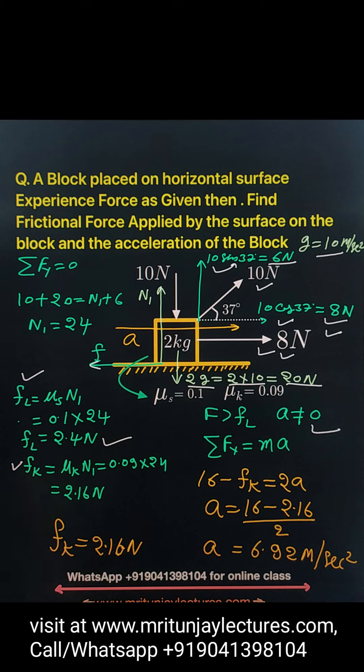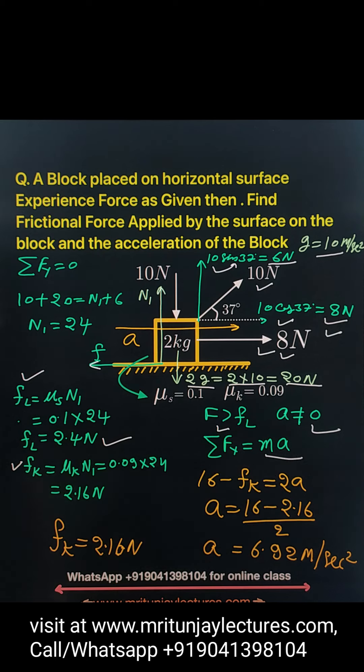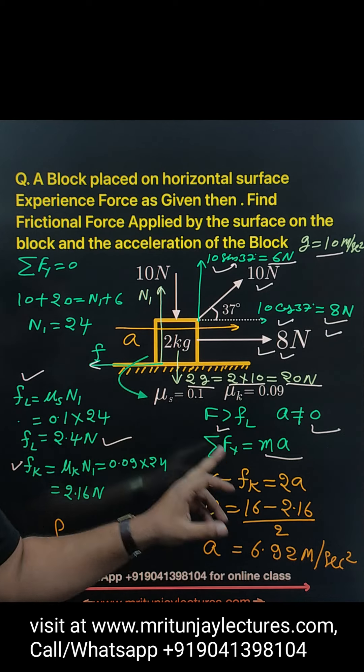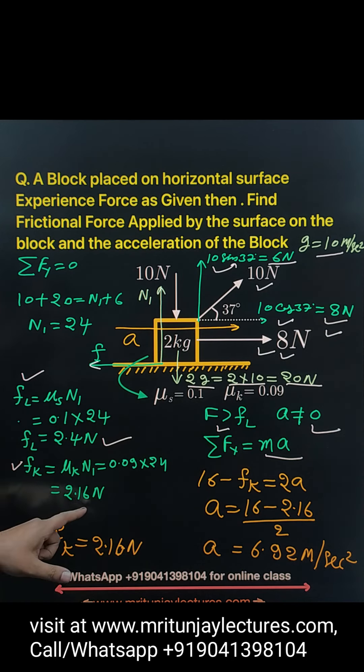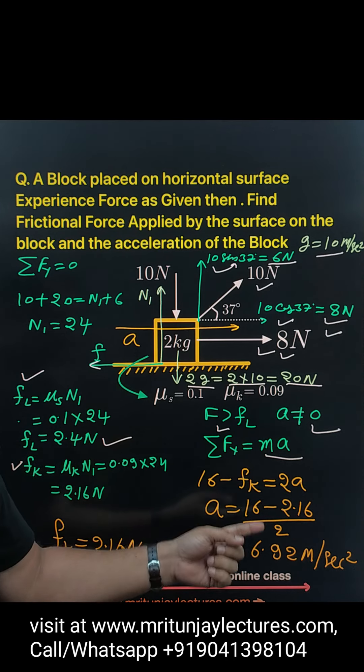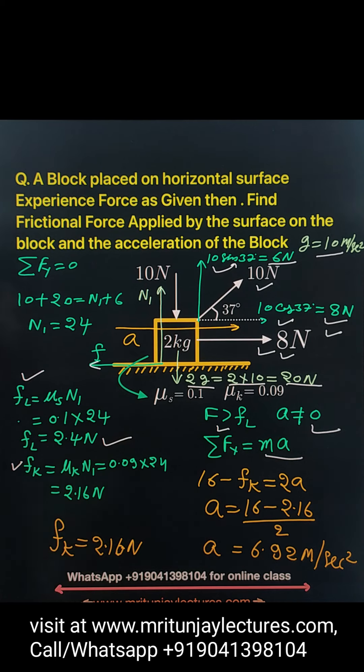Newton's second law: net force in x direction equals mass times acceleration. Unbalanced force equals mass times acceleration. 8 plus 8, that is 16, minus fk. Fk is 2.16, so 16 minus 2.16 divided by 2, then we get acceleration is 6.92 meter per second squared is the right answer.